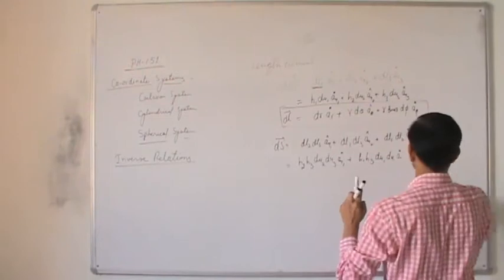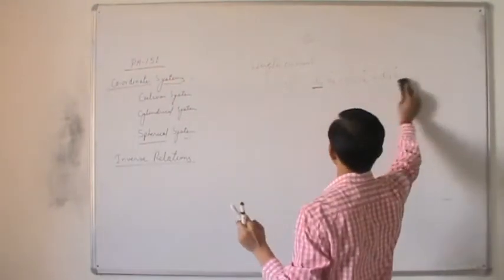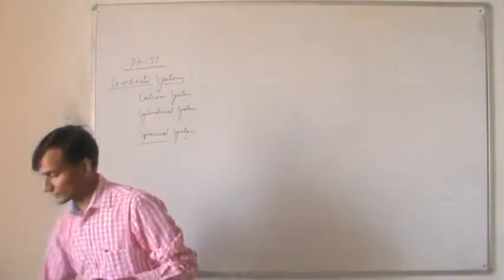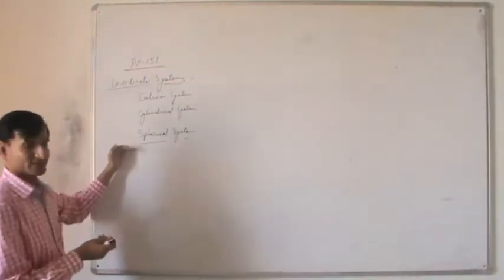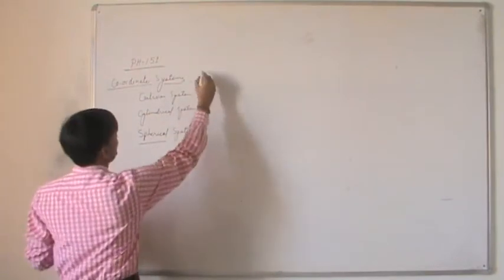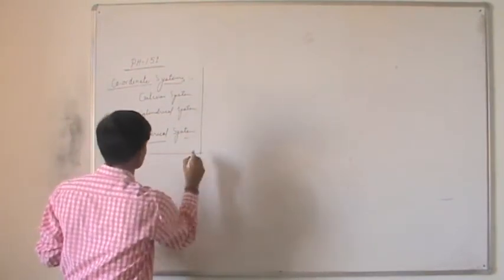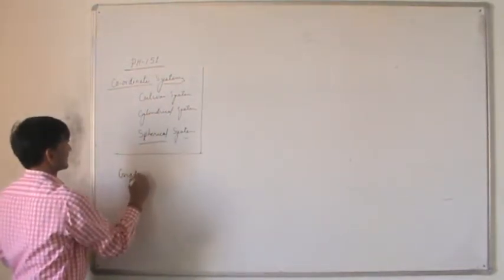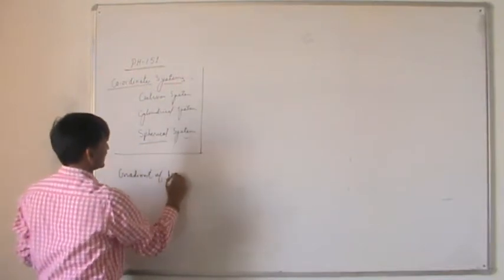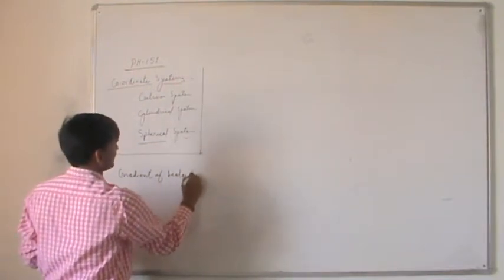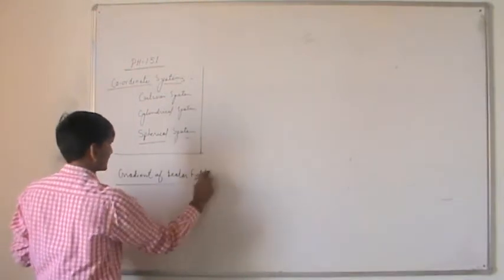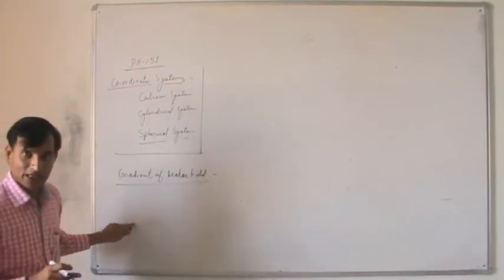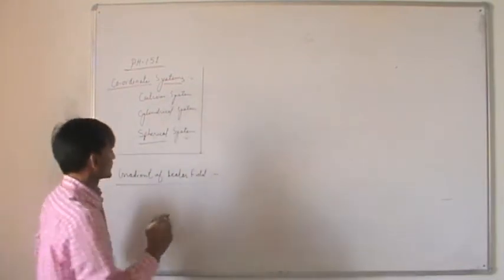This is about the spherical coordinate system. Now we move on to the next topic: gradient of the scalar field. After that we will discuss divergence of the vector field and curl of the vector field.